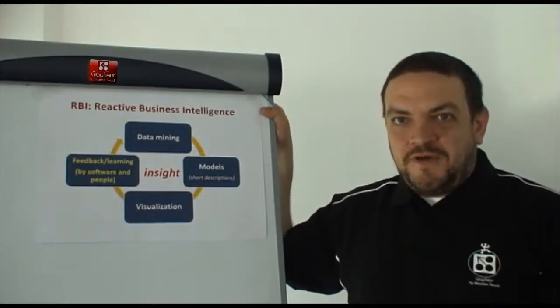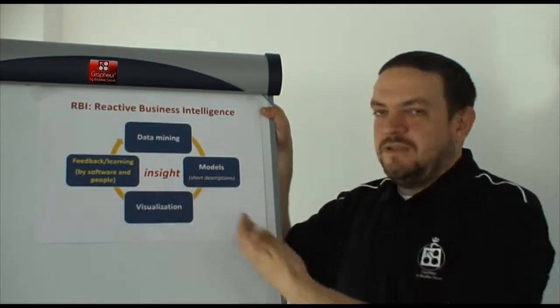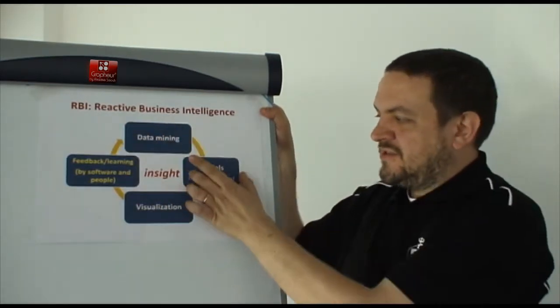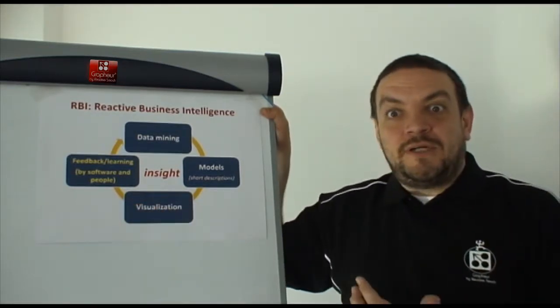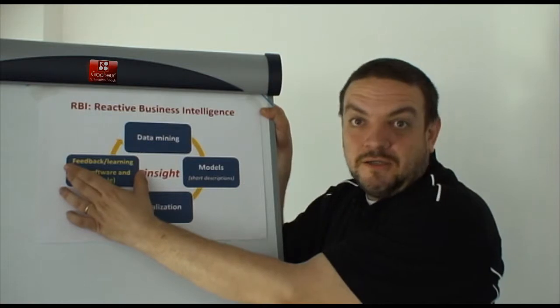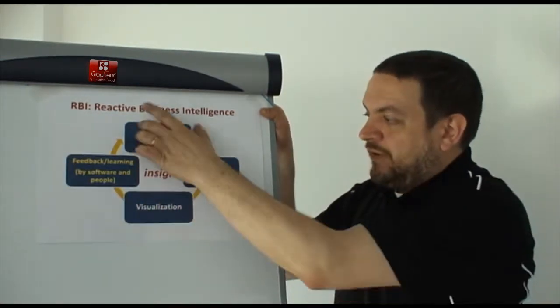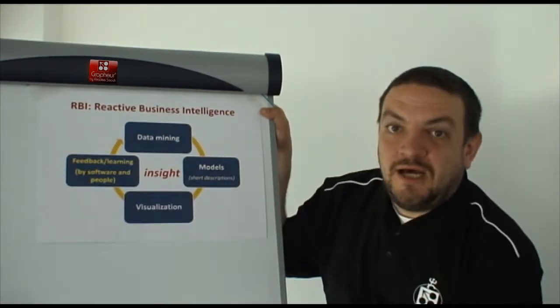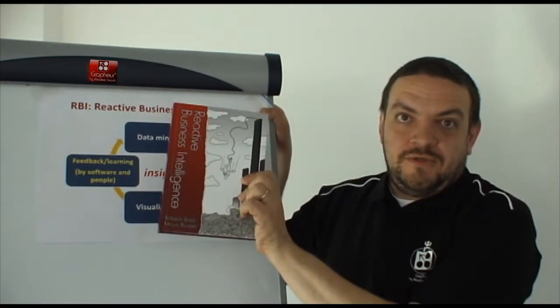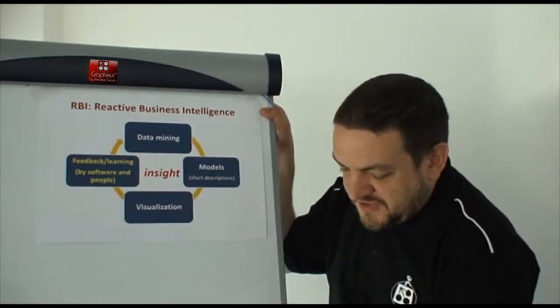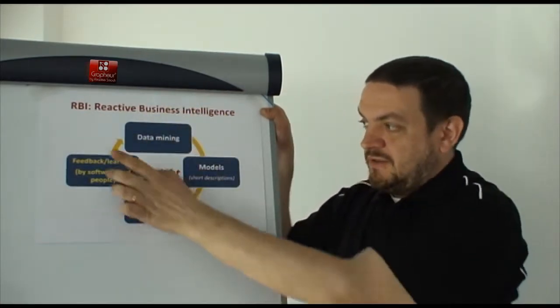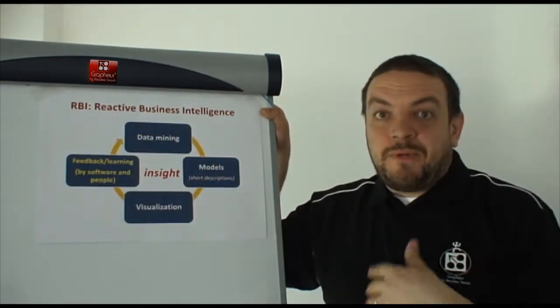We have seen the three basic ingredients to get insight on our problems: data mining, models and visualization. Then we add our particular spice, which is feedback and learning. All these building blocks are well analyzed in our book, Reactive Business Intelligence. And we will also develop some of the ideas contained in this in our upcoming videos.